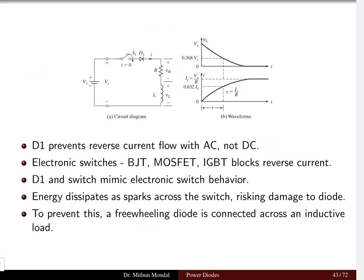Important points to be noted: D1 which is the diode prevents the reverse current flow with AC and not for DC. Suppose if we are connecting the AC source you cannot have a current flowing from cathode to anode. The current can flow only from anode to cathode because the diode is a unidirectional device.